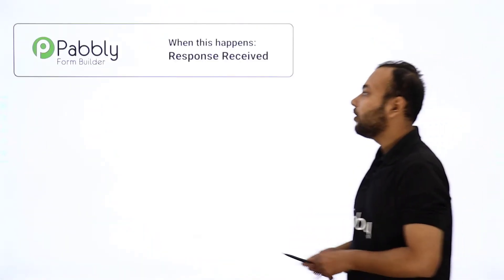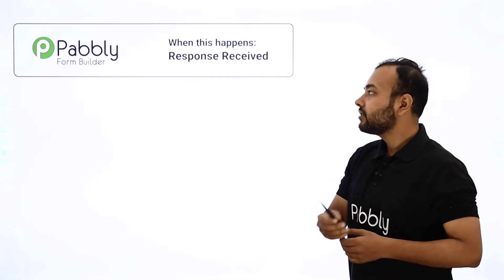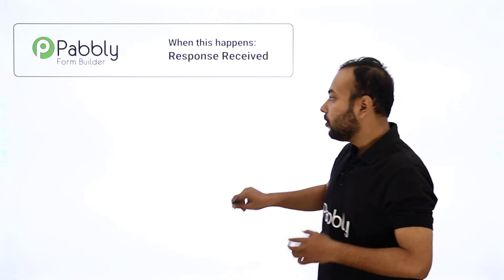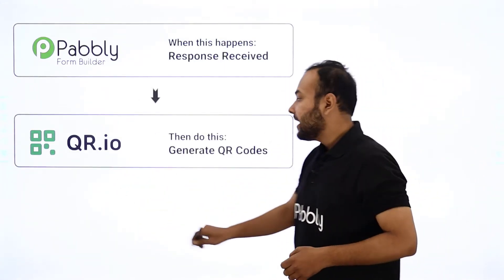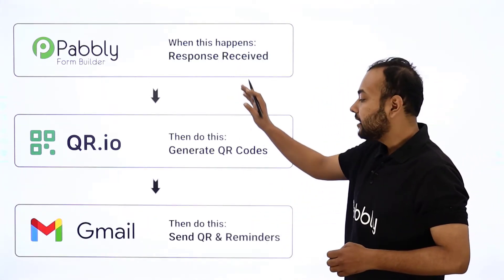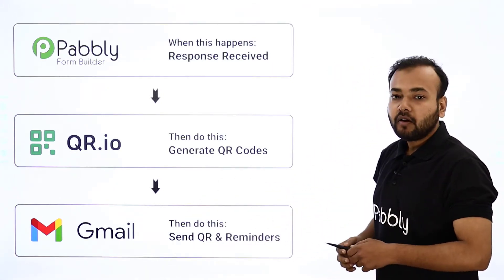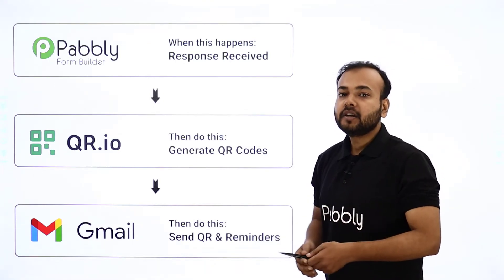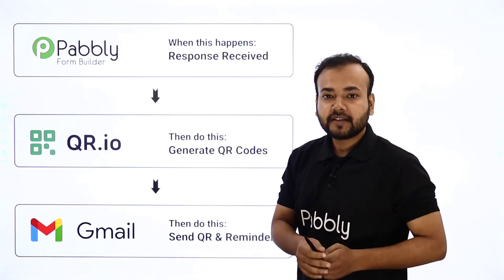I have taken the example of Pabbly Form Builder. With the help of this, we are taking registrations for the event. As and when we receive a response from any person, a QR code will get automatically generated with the help of the QR.io application, and the same QR code will be delivered to the person who filled the form via Gmail. A reminder email will also get automatically delivered one day before the actual date of the event.